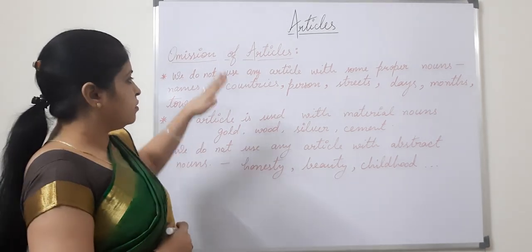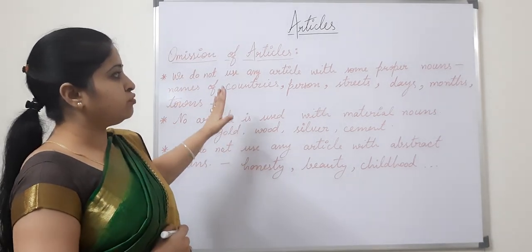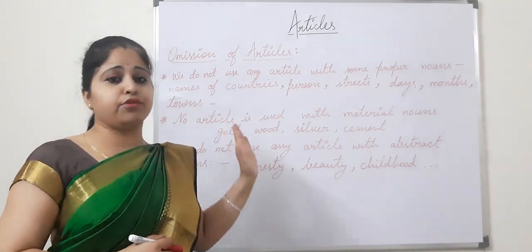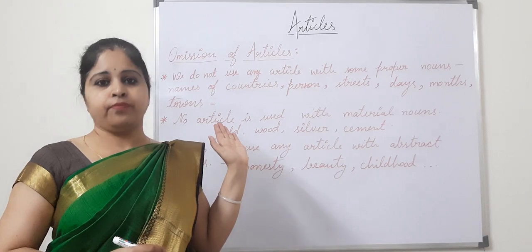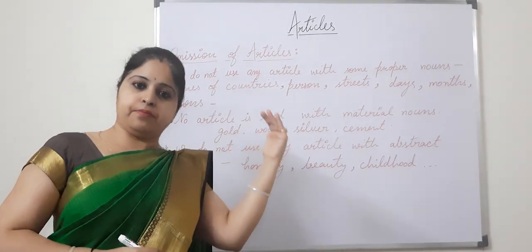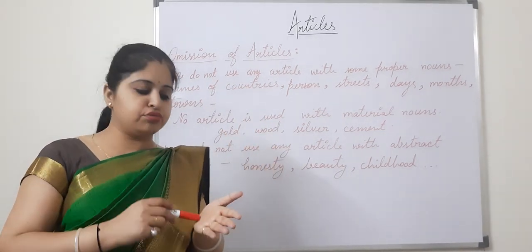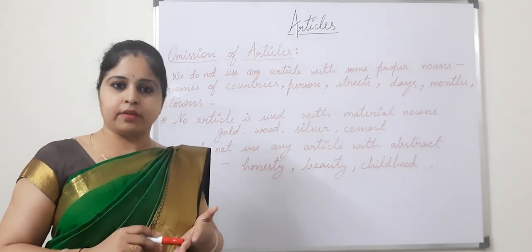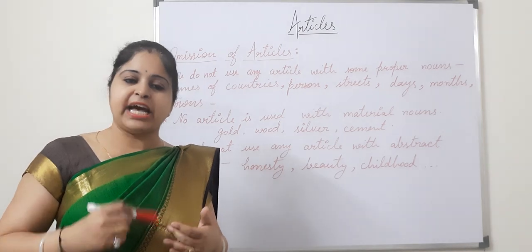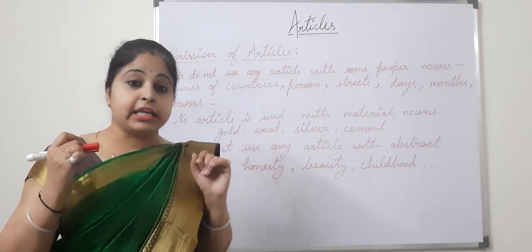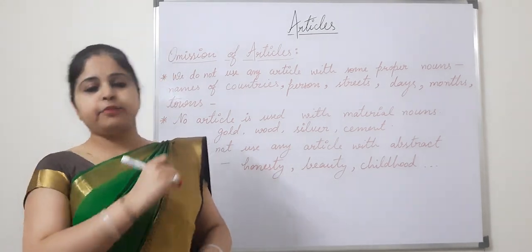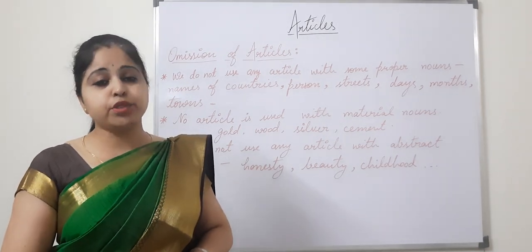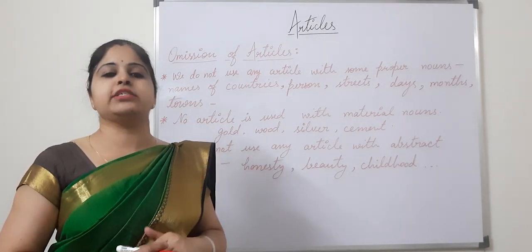Keep one thing in mind: whenever we talk about anything which is specifically indicated, we use the definite article 'the'. But for material nouns and abstract nouns, you do not use any article. Keep in mind where to use 'a', 'an', and 'the'. That way you'll get good marks in English grammar.